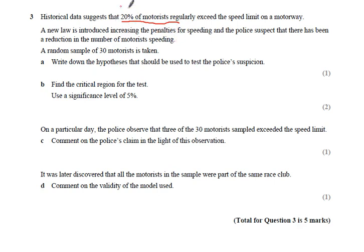This means the probability of motorists speeding, any motorist that goes past the camera, will be reduced. So that is a probability that we're going to use. A sample size of 30, so n equals 30. Write down the hypotheses that should be used to test the police's suspicion.